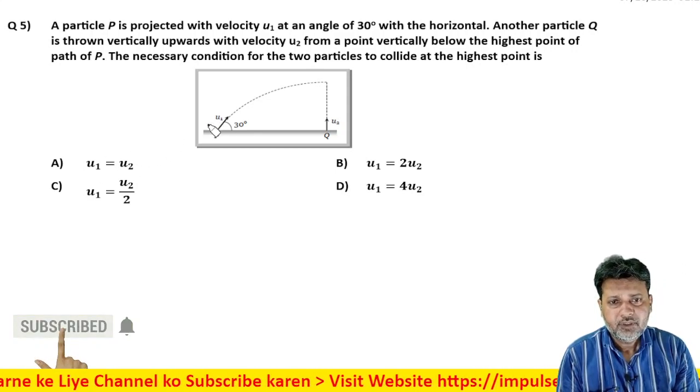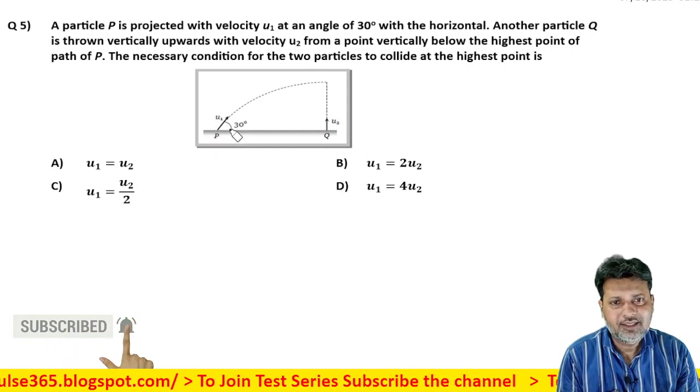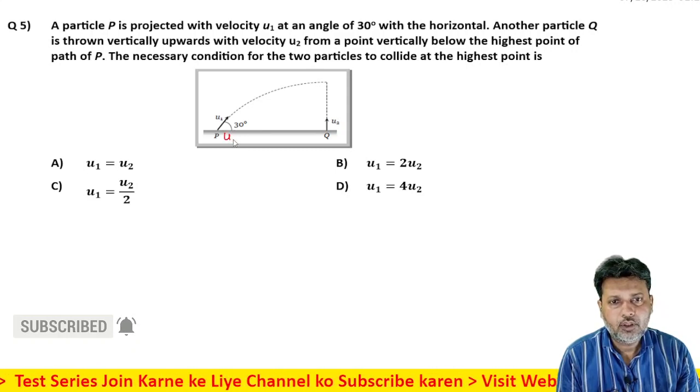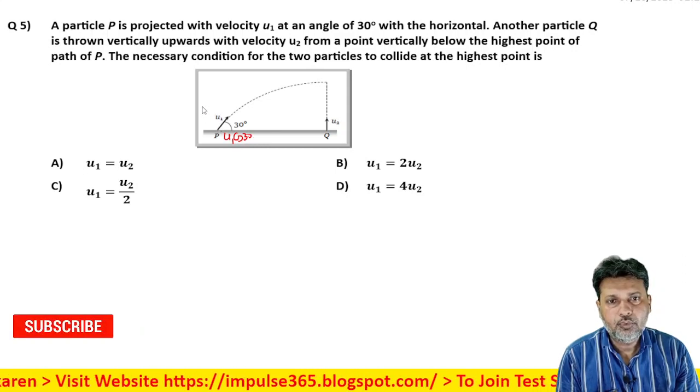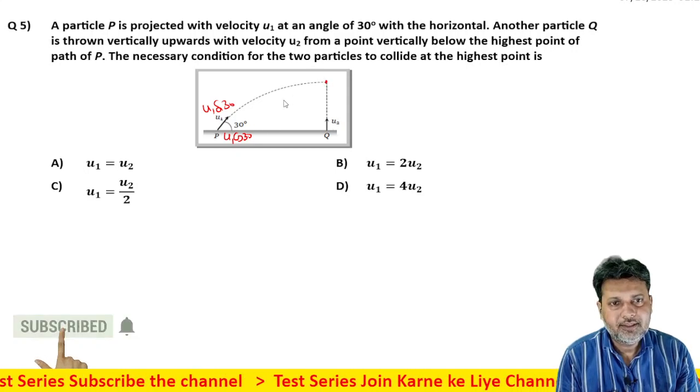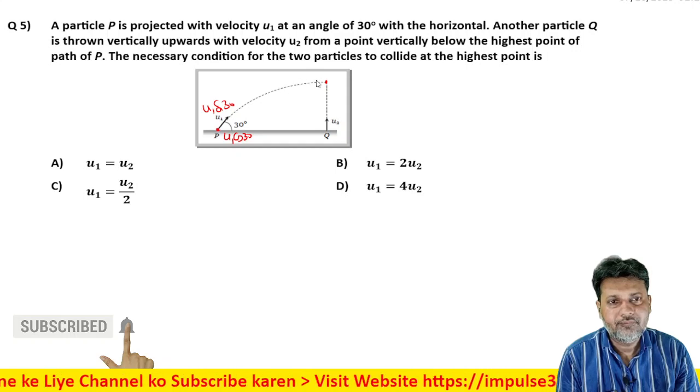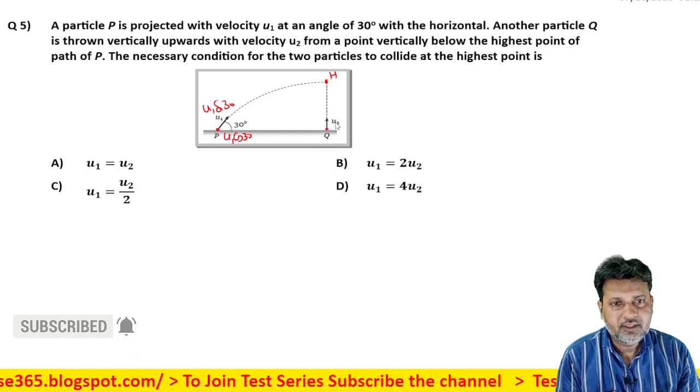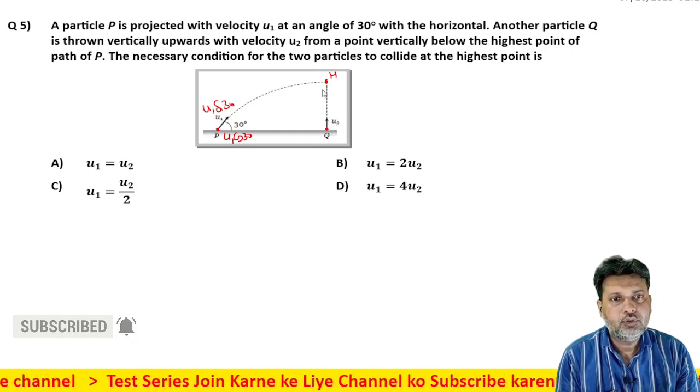Ab dekhiye P point se a particle U1 velocity se throw kiya ja raha hai horizontal se 30 degree angle banate huye. Toh iska horizontal direction component kya hoga U1 cos 30 degree. Aur vertical direction component kya hoga U1 sin 30 degree. Aur highest point hai is path P ka, particle P se throw kiya ja raha hai, uska highest point yahan par hai. Aur Q point se a particle U2 velocity se vertically upward throw kiya ja raha hai.